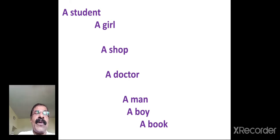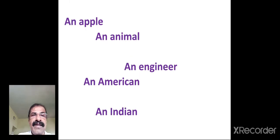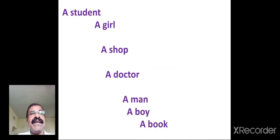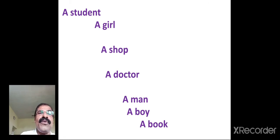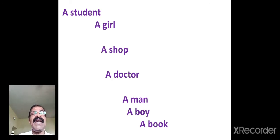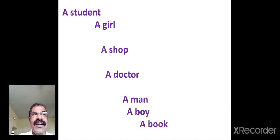Look at some of the examples given here: a student, a girl, a shop, a doctor, a man, a boy, a book, an apple, an animal, an engineer, an American, an Indian. When I say 'a student,' I'm not talking about one particular student — you know nothing about the student I'm talking about, so that is used in its general sense. Similarly, when I say 'a girl,' I'm talking about a girl in general.